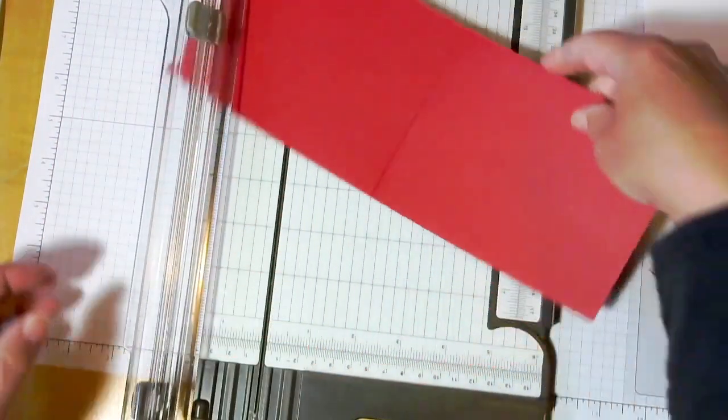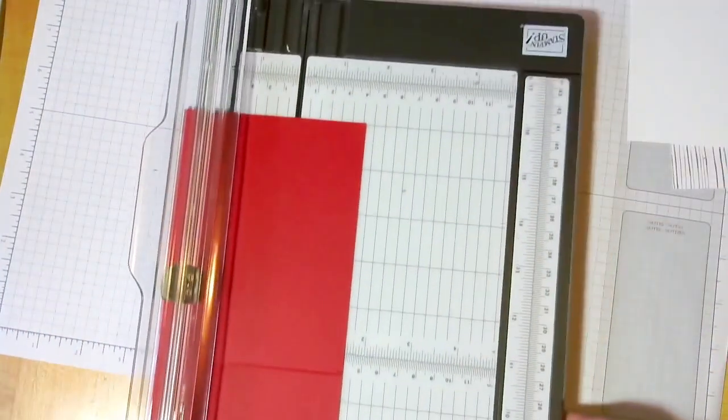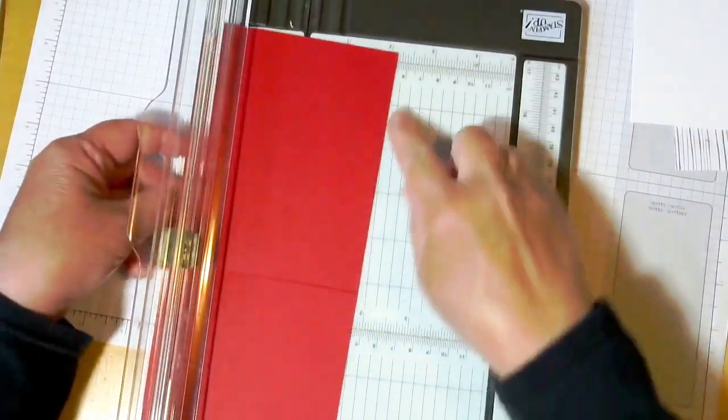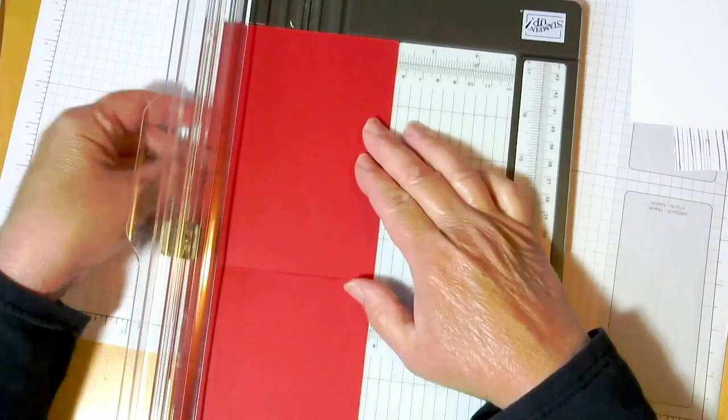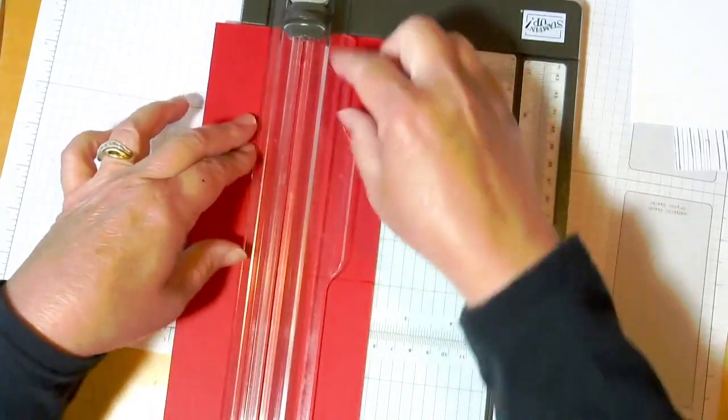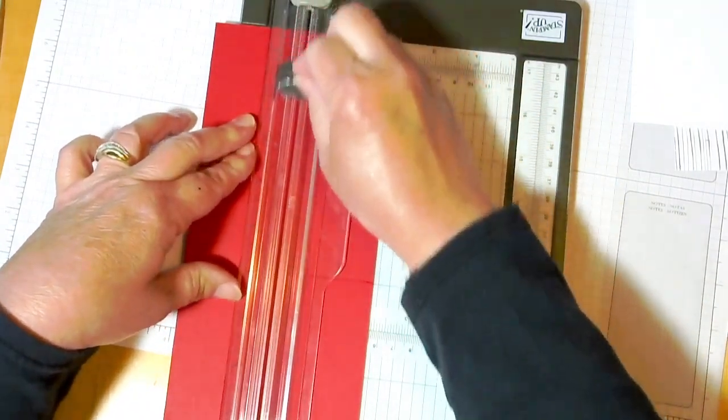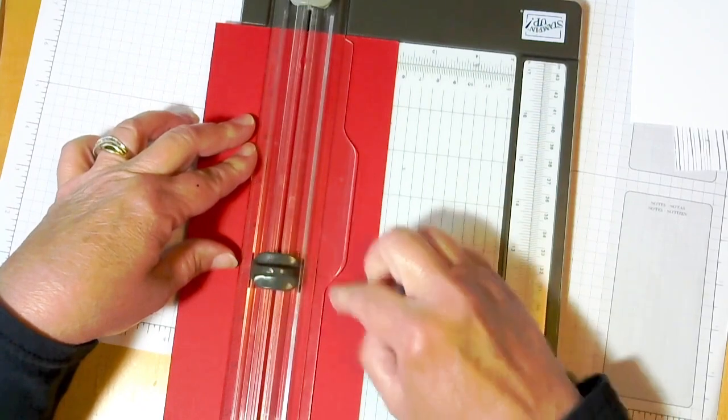Then we're going to turn this, this direction, let me pull this down here so you can see it better. So we're going to put this on 2 1/8, then we are going to cut from the end up to the center so that we're removing this top half. So we want to stop at the score line.